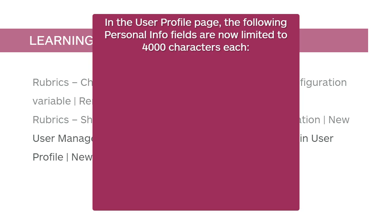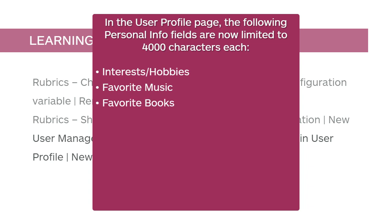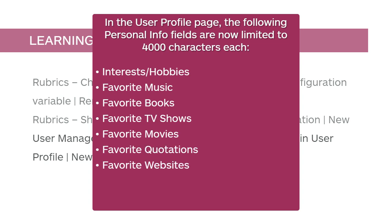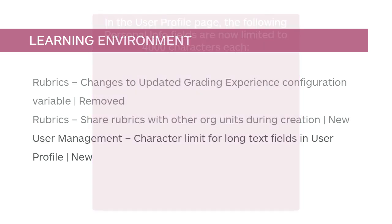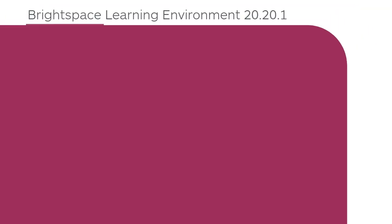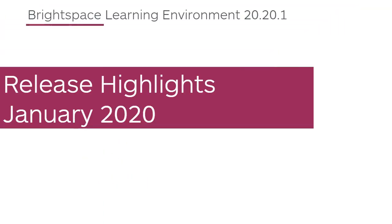In the user profile page, the following personal info fields are now limited to 4000 characters each: interests and hobbies, favorite music, favorite books, favorite TV shows, favorite movies, favorite quotations, favorite websites, future goals, and most memorable learning experience. Thanks for watching — we are always looking to hear from you about the videos you'd like to see. Drop us a comment below and as always don't forget to subscribe!